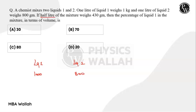The question says that the final mixture is half a liter for 430 grams. So if half a liter is 430 grams, that means one liter will be twice this. So the resultant mixture in one liter will be 860 grams.